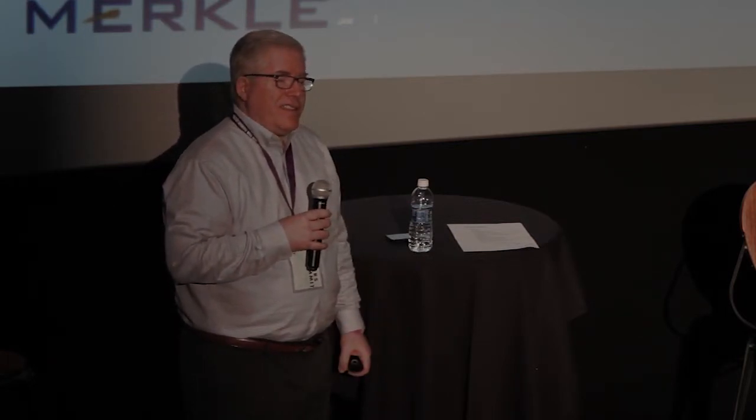AdaBoost came along and started adding cross-validation to try to get less redundancy between the 100th and 101st tree. But they were still too highly correlated. So XGBoost comes along and adds gradient descent on top of that, and really improved the accuracy.